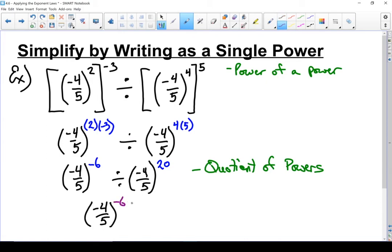I'm going to take minus 6 and subtract 20 from that. That equals negative four-fifths. Still haven't changed that base. Minus 6 minus 20 gives me minus 26.